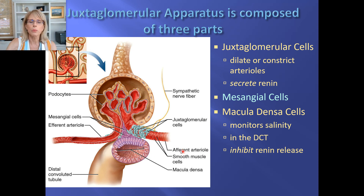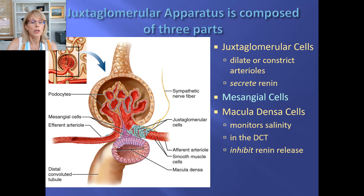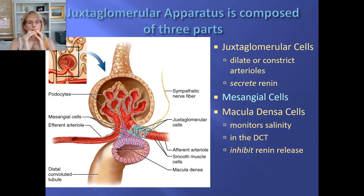Your body wants the pressure inside the glomerulus to be right in the sweet spot so the right amount of fluid leaves. The diameter of the efferent arteriole can also be adjusted, but the juxtaglomerular cells are more actively regulating the size of the afferent arteriole. If blood pressure is too high, the juxtaglomerular cells sense it and can constrict the arteriole so the pressure drops back into the sweet spot.